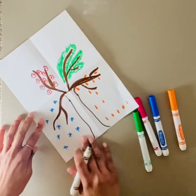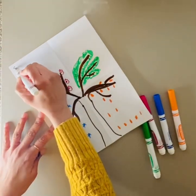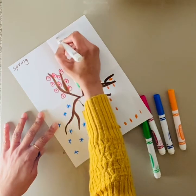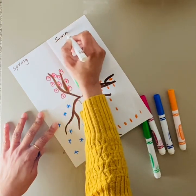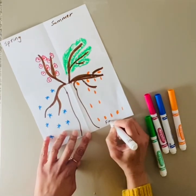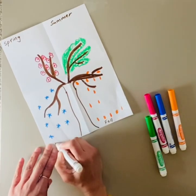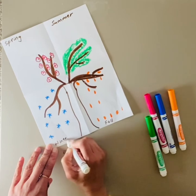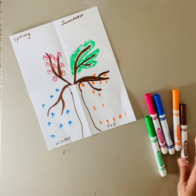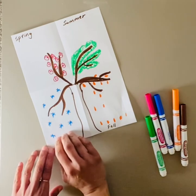So let's go ahead and name our seasons. This is spring, summer, fall, and winter. So you have a tree the way it looks in all four seasons.